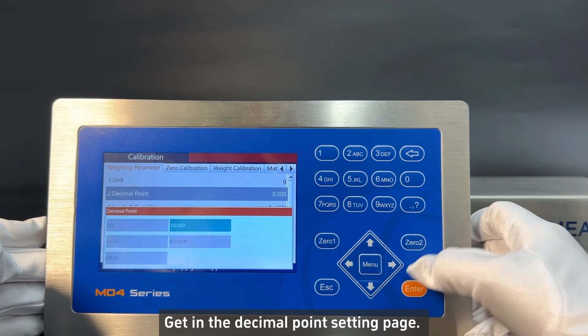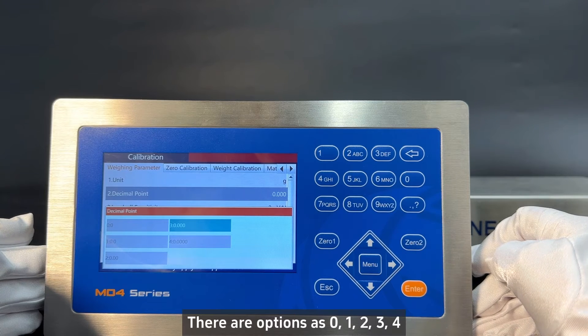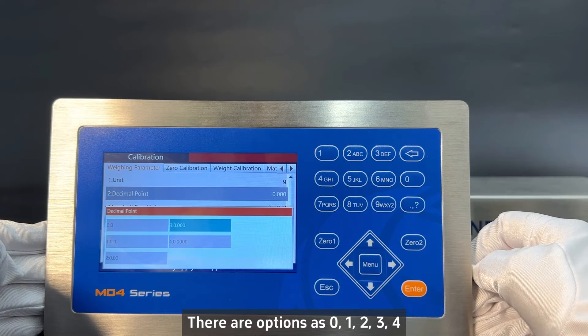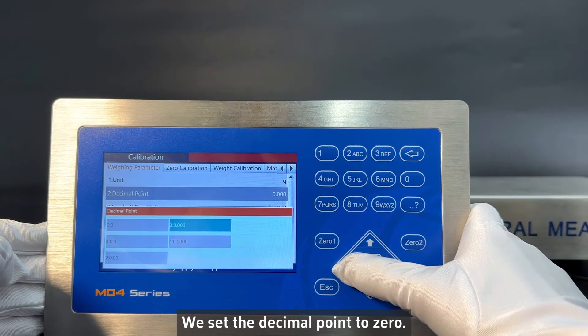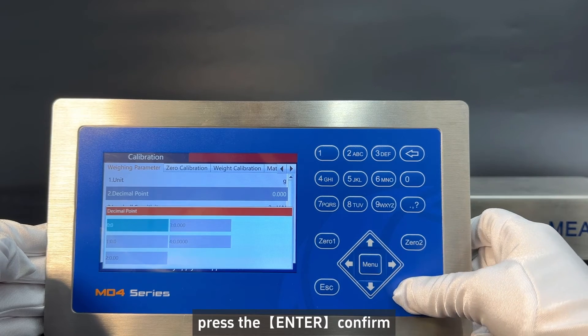Get in the decimal point setting page. There are options as 0, 1, 2, 3, 4. We set the decimal point to 0. Press the enter to confirm.